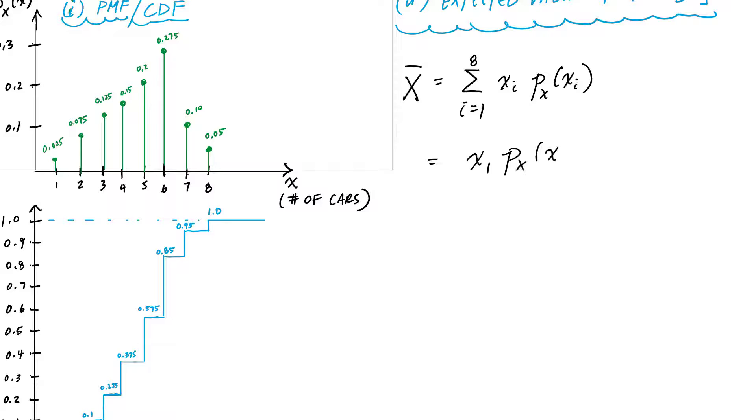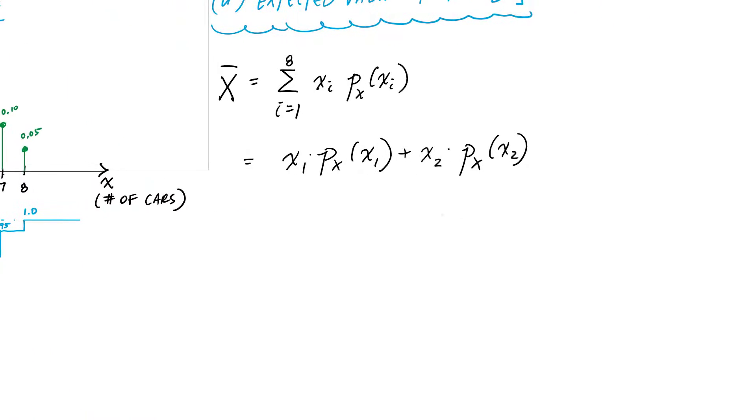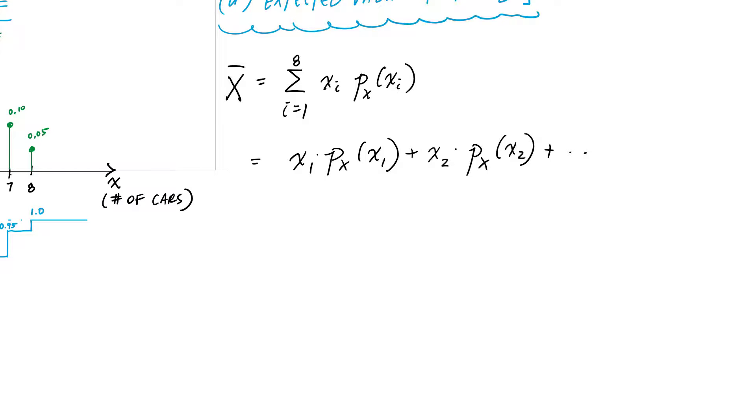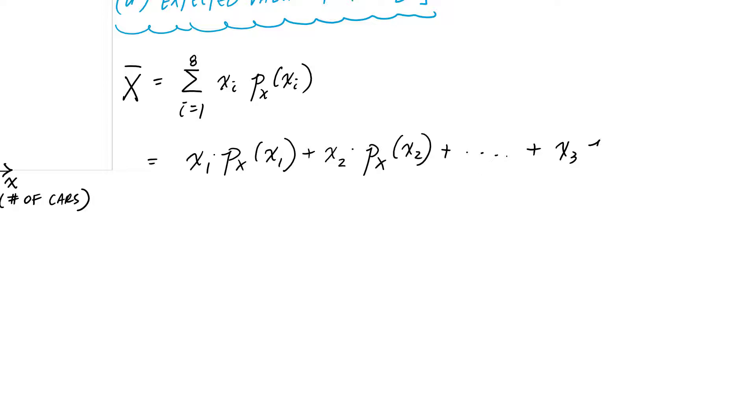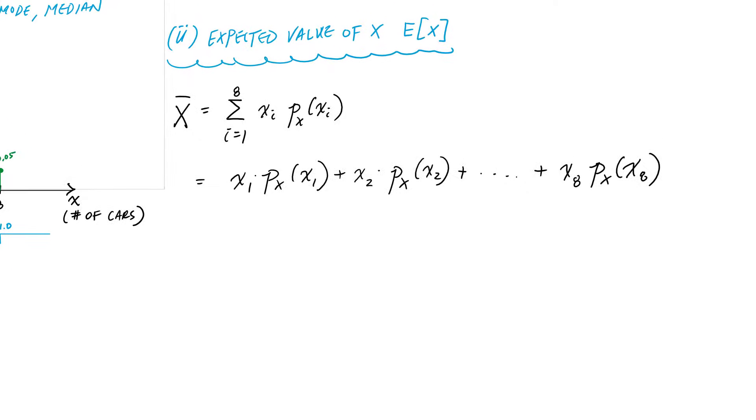For instance, X_1 times the probability of X equal to X_1, plus X_2 times the probability of X equal to X_2, dot dot dot, all the way to X_8, the eighth value, times the probability of X equal to X_8.